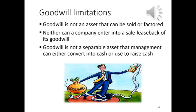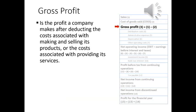Goodwill has substantial limitations. Goodwill is not an asset that can be sold or factored — a company cannot enter into a sale, lease, or factoring of its goodwill. Essentially, goodwill is not a separable asset that management can either convert into cash or use to raise cash against. Gross profit is the profit a company makes after deducting the costs associated with making and selling its products or providing its services — it is the difference between the aggregate costs of materials and production and the revenue received from selling products or services to customers.